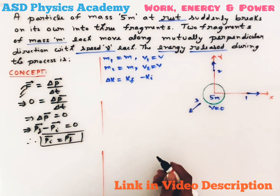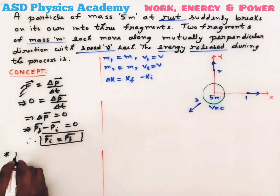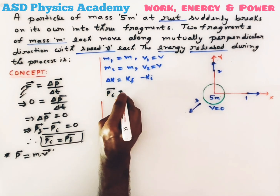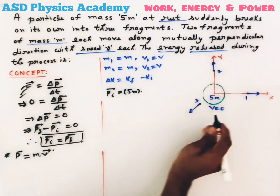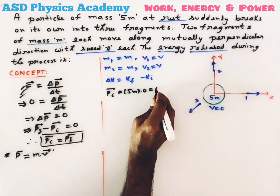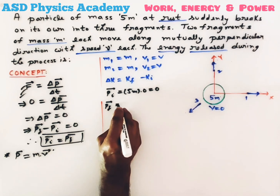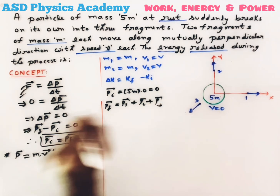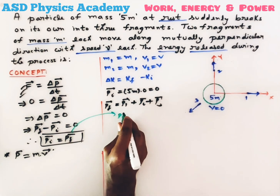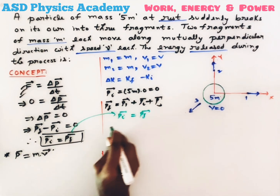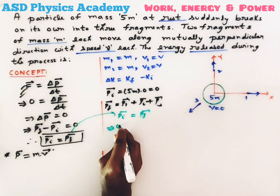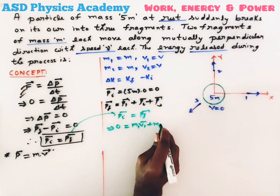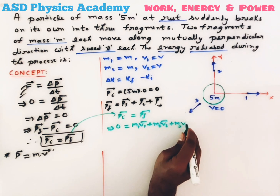This momentum is the product of mass and velocity. In our question, the initial momentum before explosion is zero because the mass is 5m and the velocity is 0. The final momentum is carried by the three particles — p1 + p2 + p3. So momentum before explosion equals momentum after explosion: 0 = m1·v1 + m2·v2 + m3·v3.